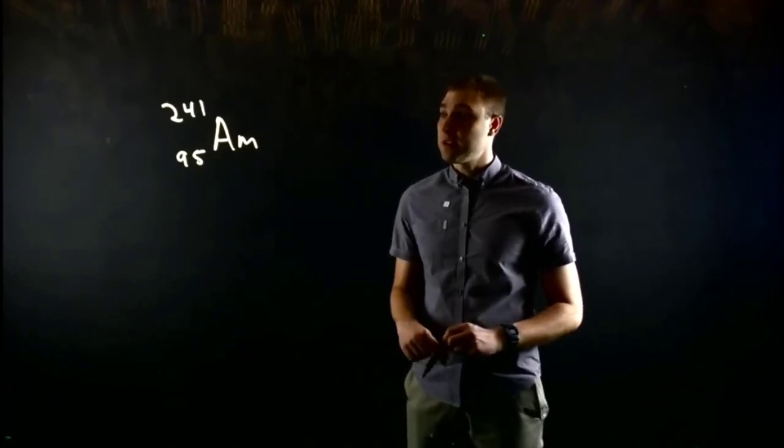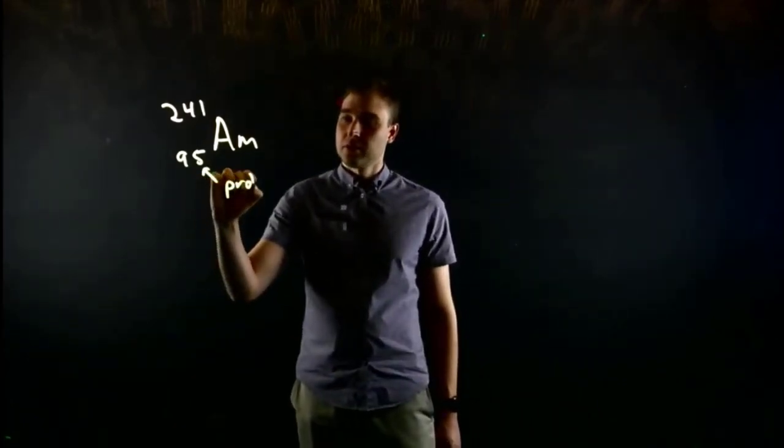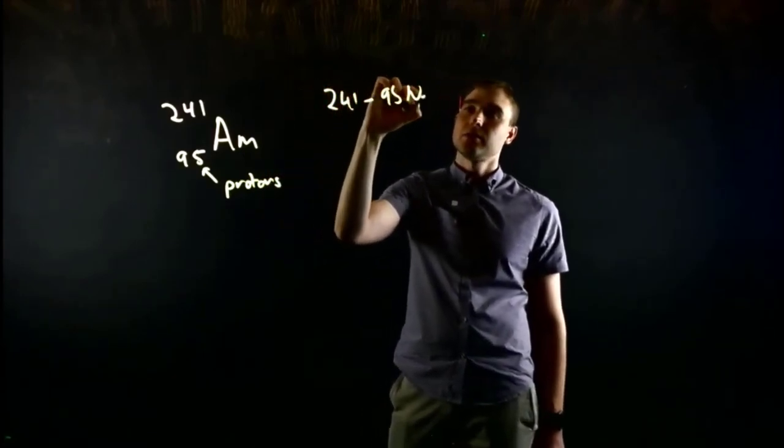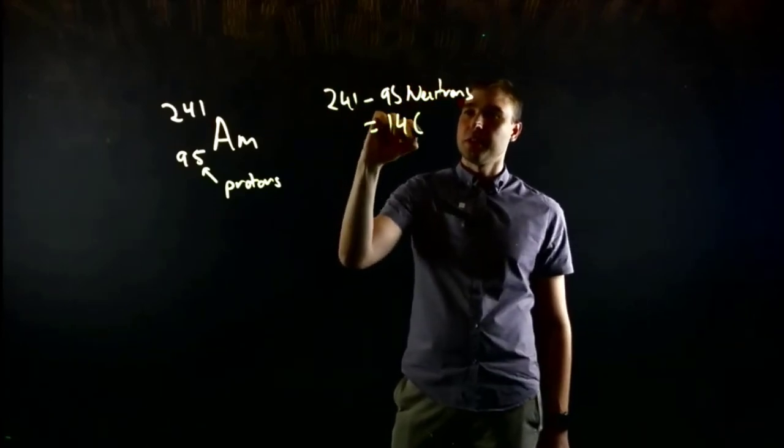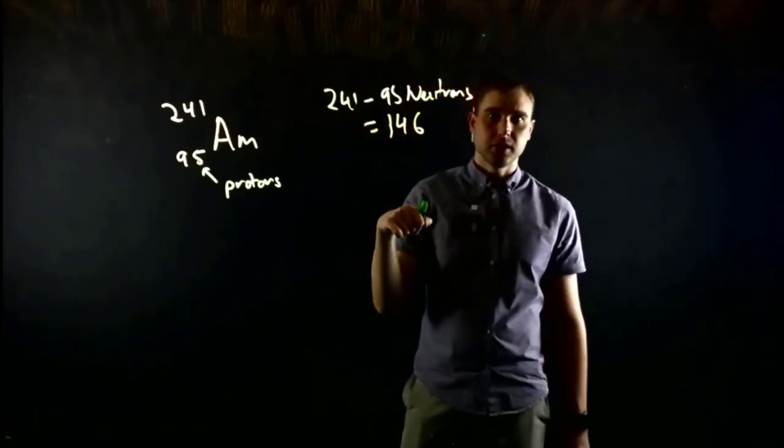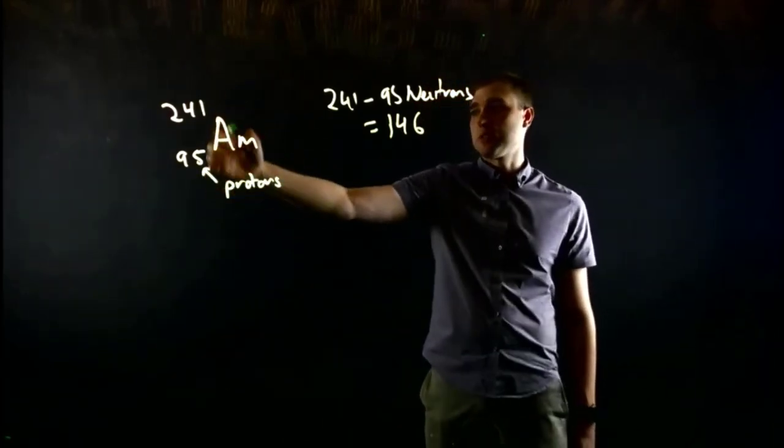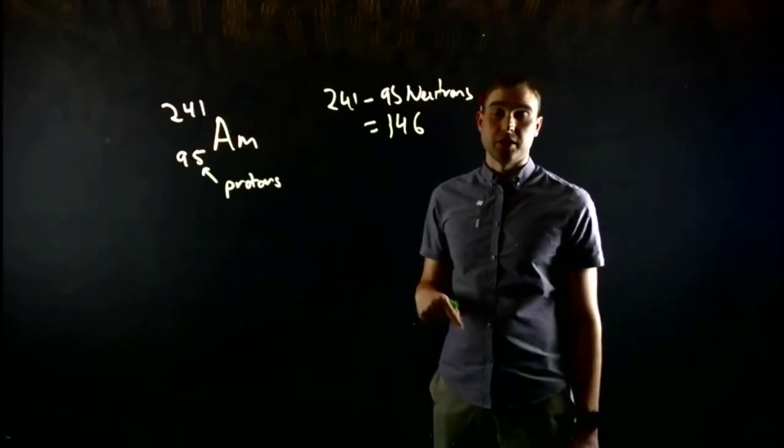Okay, so americium-241, we have 95 protons. We have 241 minus 95 neutrons, which is 146. You can check my math, I think I'm right. So 146 neutrons. The number of electrons in a neutral atom is equal to the number of protons. So 95 electrons around americium-241.